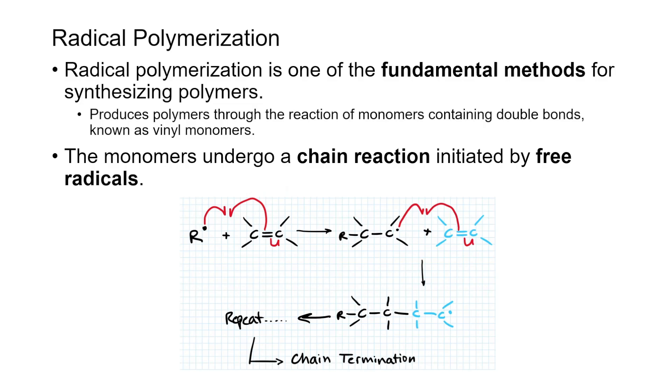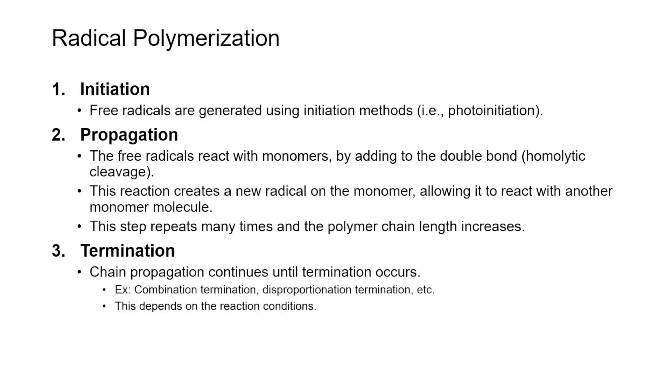The monomers undergo a chain reaction initiated by free radicals. Before looking at the mechanism, note that all polymerization reactions involve three steps: initiation, propagation, and termination. For any polymerization, you have initiation where something starts the reaction, propagation where you're forming the polymer in repeated steps, and termination where you stop the reaction to produce your final polymer.